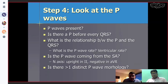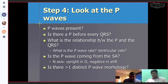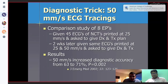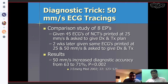Step 4 is to look at the P-waves. As my teacher said: cherchez le P. Is there a P-wave? Where is it — before or after the QRS complex? What is the relationship between the P and QRS? What is the P-wave rate relative to the ventricular rate? Is the P-wave coming from the SA node? Is there one P-wave morphology or more than one? If you have difficulties, use 50 mm per second ECG tracings — it will help you.